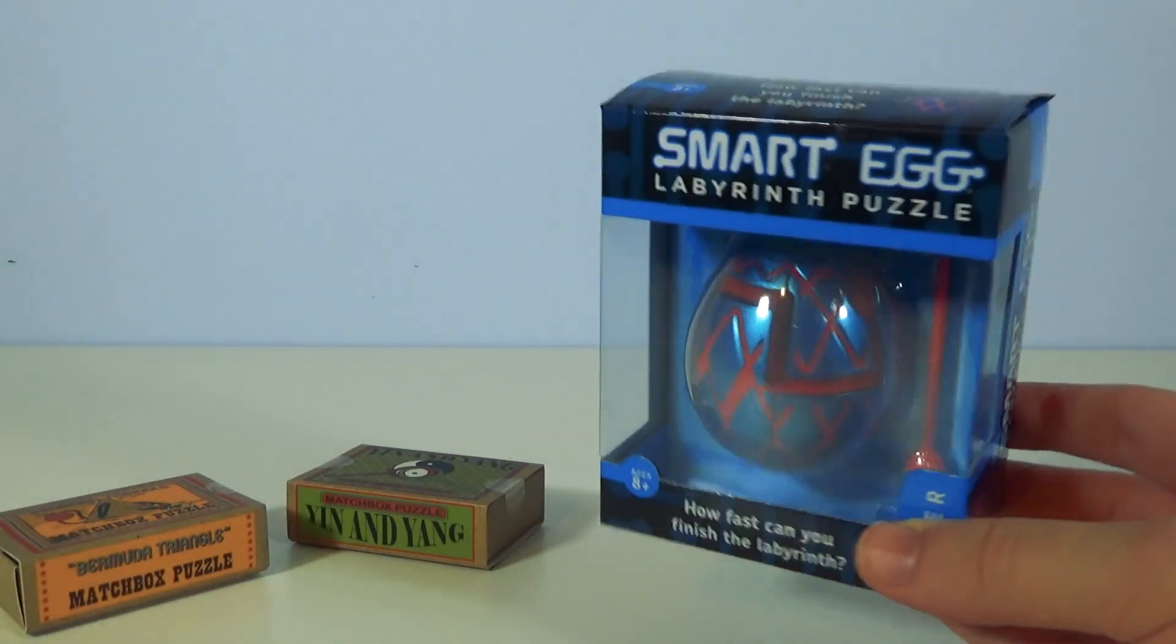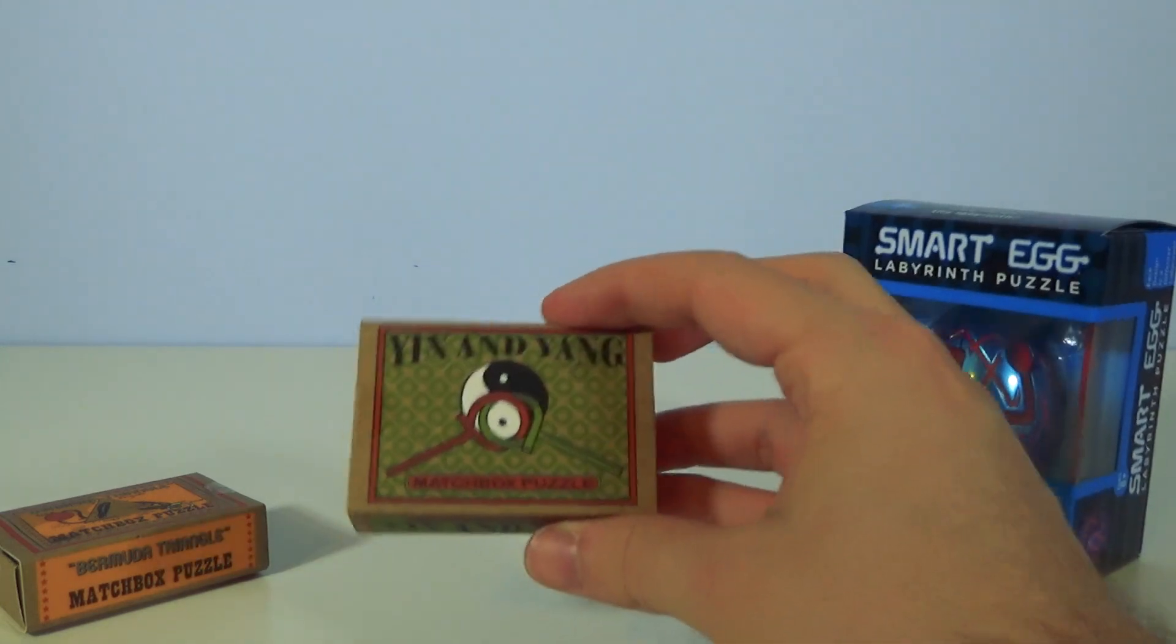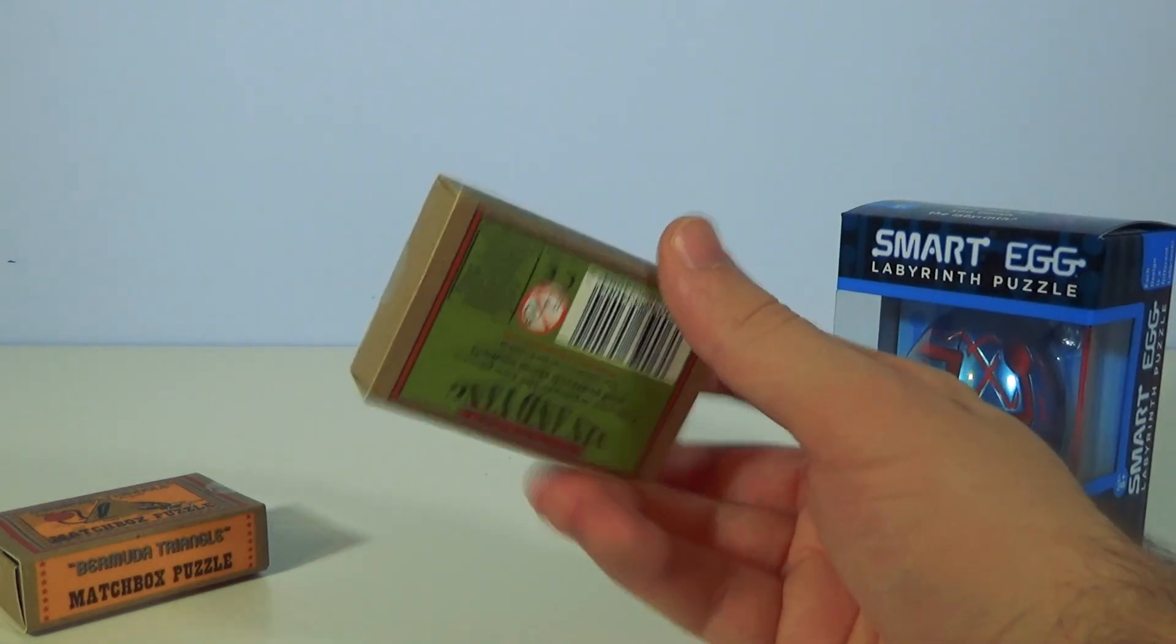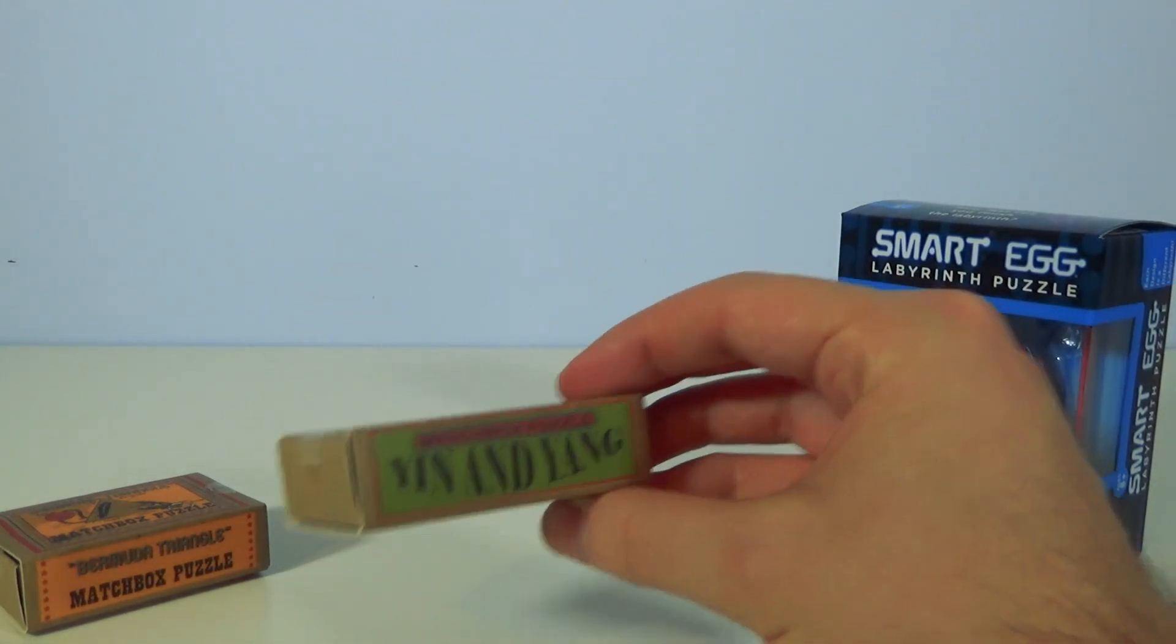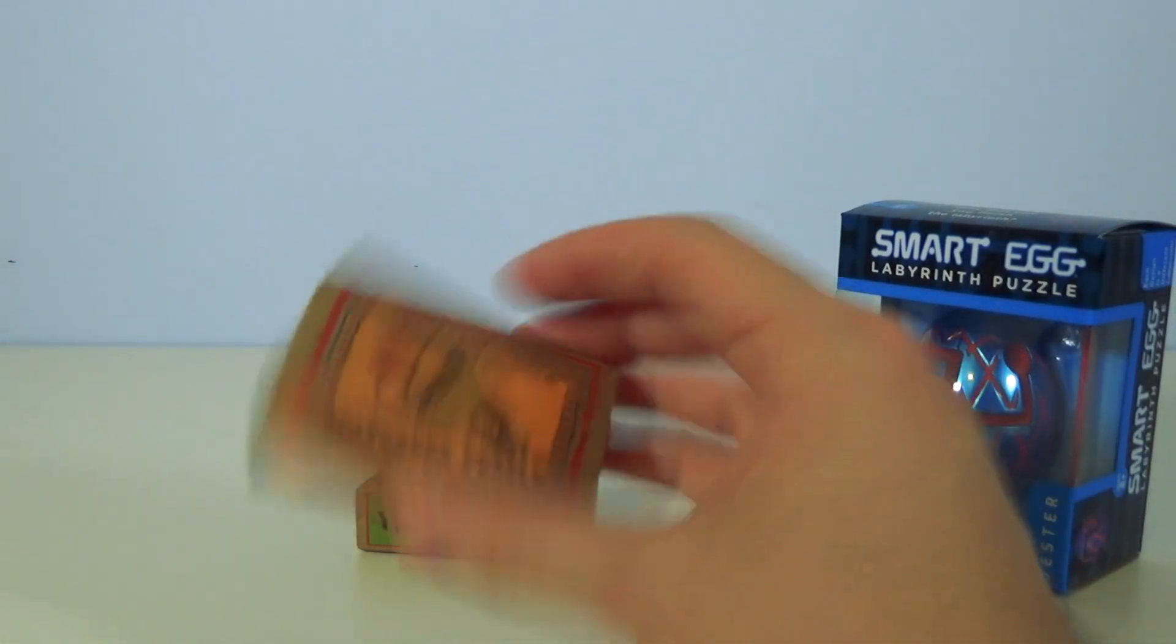We have this thing to start with, which is the Smart Egg Labyrinth puzzle, and then we've got these little matchbox puzzles which I saw and thought were incredibly cute-looking. They're actually little puzzles that come in this little matchbox thing and that's it. And there's two of them. Actually, we'll do them first.